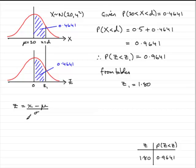Well, we know that any z value is always equal to the observed value x minus the mean over sigma. So therefore, what we've got is that z1 must equal the observed value d minus the mean 20, all divided by the standard deviation sigma, which would be 4.